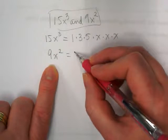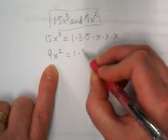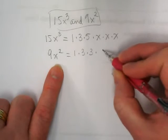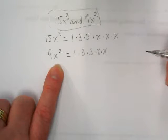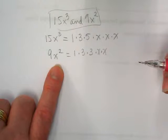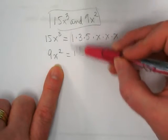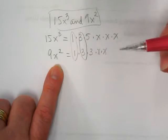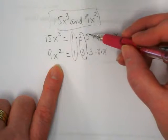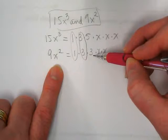And then what are my factors of nine? Three times three times X. I'm going to circle what it has in common. They have the one. There's a single three. This five is by itself, and this three is by itself.